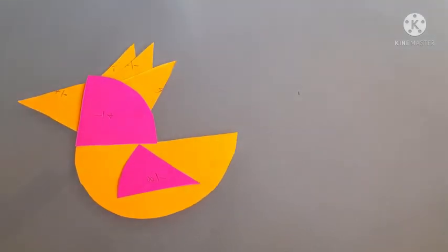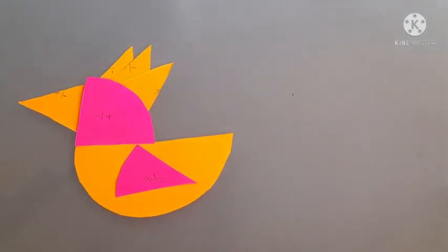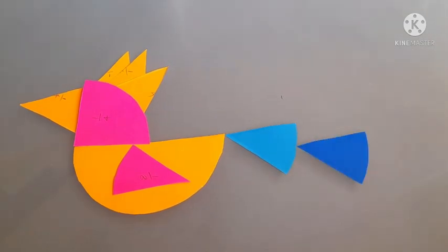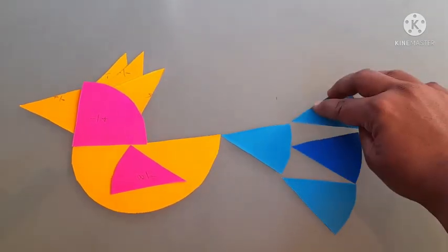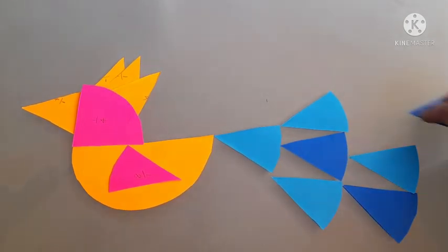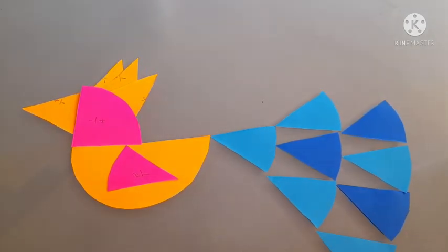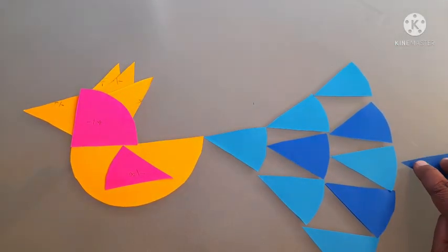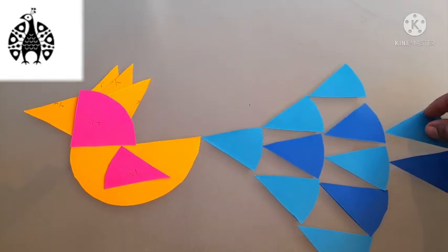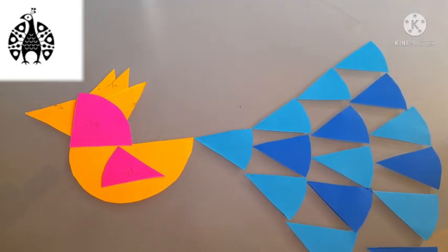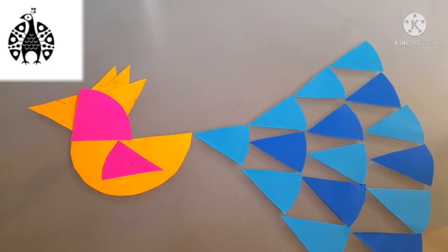So here we have to add the feathers, right? So for adding feathers I have used one-eighth. Just see how I'm arranging one-eighth. Here I have used blue color. You can use your own creative colors. It can be multicolor so it will be nice to see. Wow, we got a beautiful peacock!